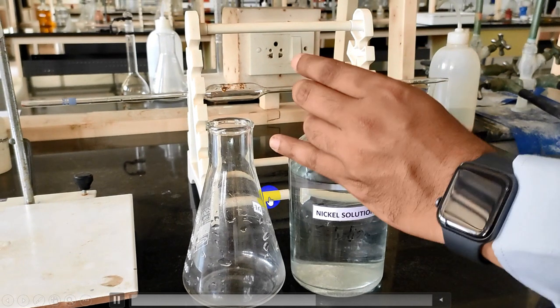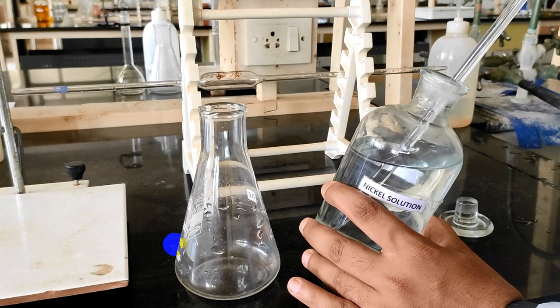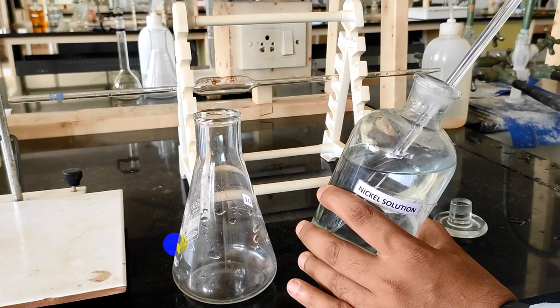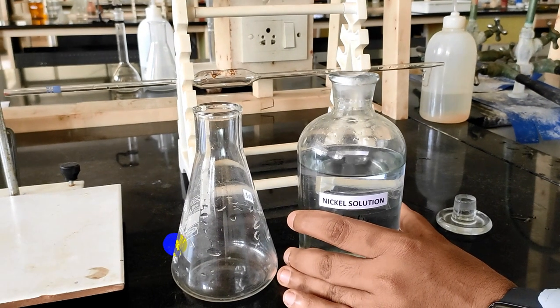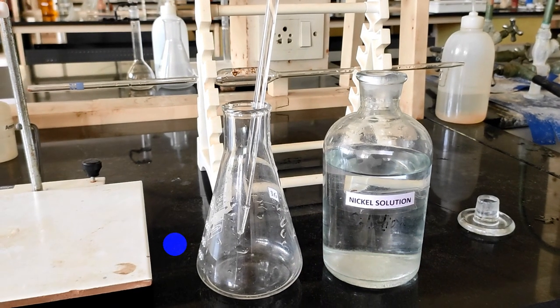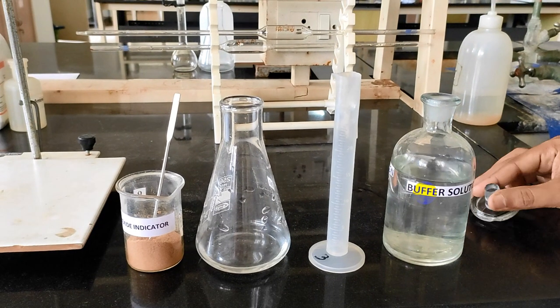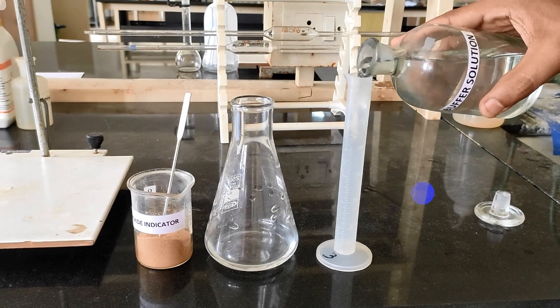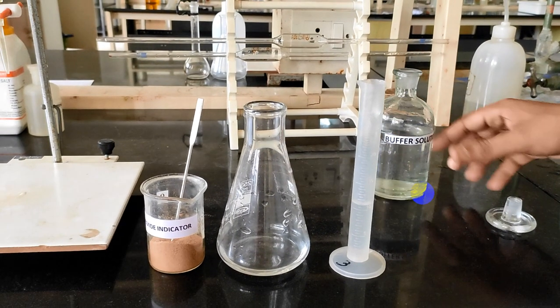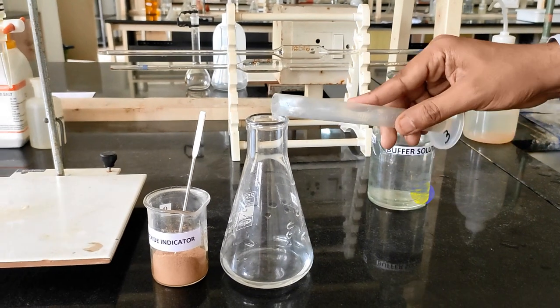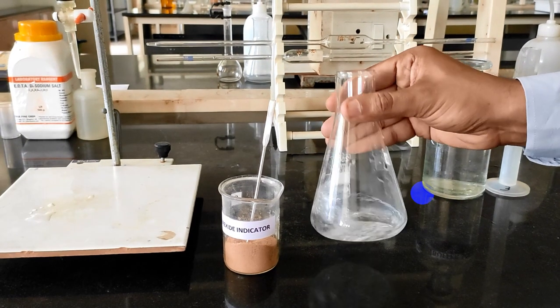Pipette out 25 ml of the nickel solution into the conical flask. This is your sample solution where you need to measure the amount of nickel present in the sample solution. Now add buffer. Buffer is added to maintain the constant pH.